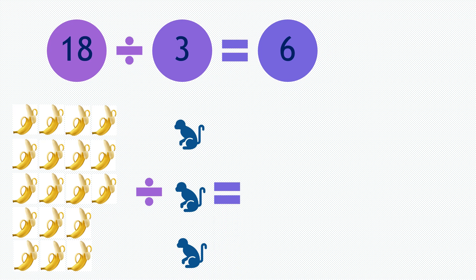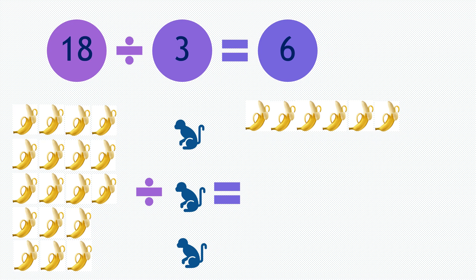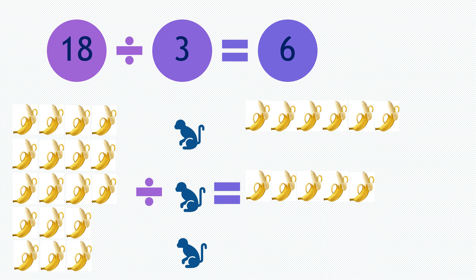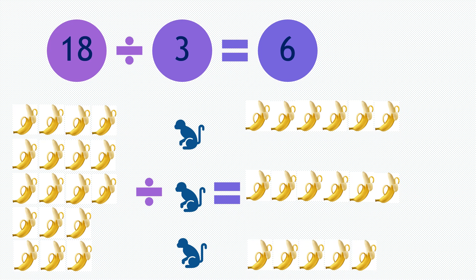Each monkey will receive 6 bananas: 1, 2, 3, 4, 5, 6. The next monkey: 1, 2, 3, 4, 5, 6. And the last one: 1, 2, 3, 4, 5, 6.